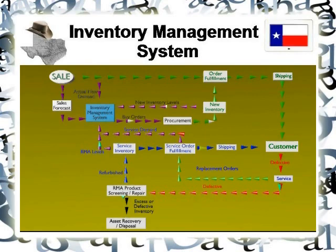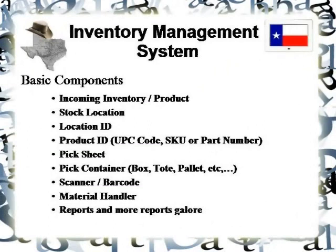When building an inventory management system, there are some physical assets to account for. The basic components are the incoming inventory or product itself, the stock location, the ID for the location, the product ID, the pick sheet, the pick container, the scanner or barcode — the mechanism by which you capture or transfer information — the material handler, or the person processing all of this, and of course reports and more reports.